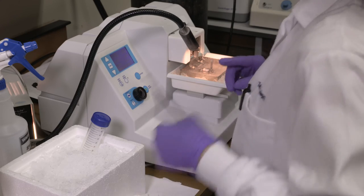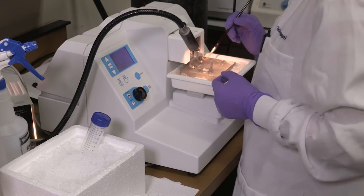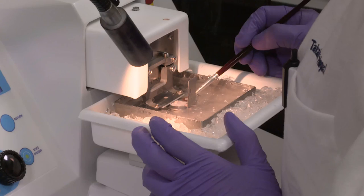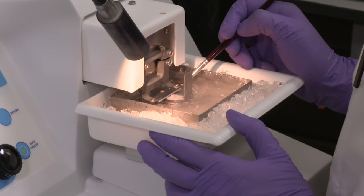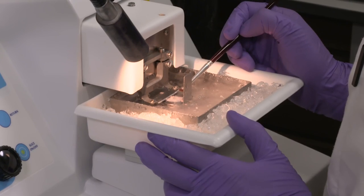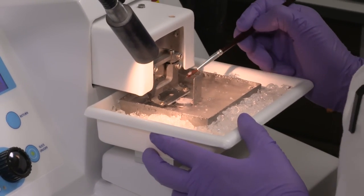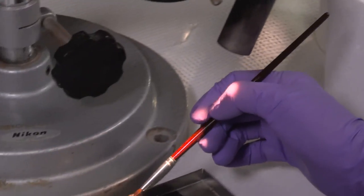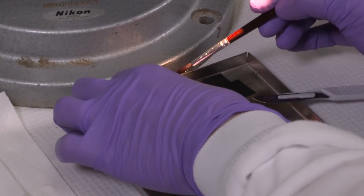The vibratome water bath is filled with ice cold saline and the brain slices are cut slowly with the vibrating blade to minimize the damage to neurons. For imaging purposes, we will slice into 200 micrometer thickness.